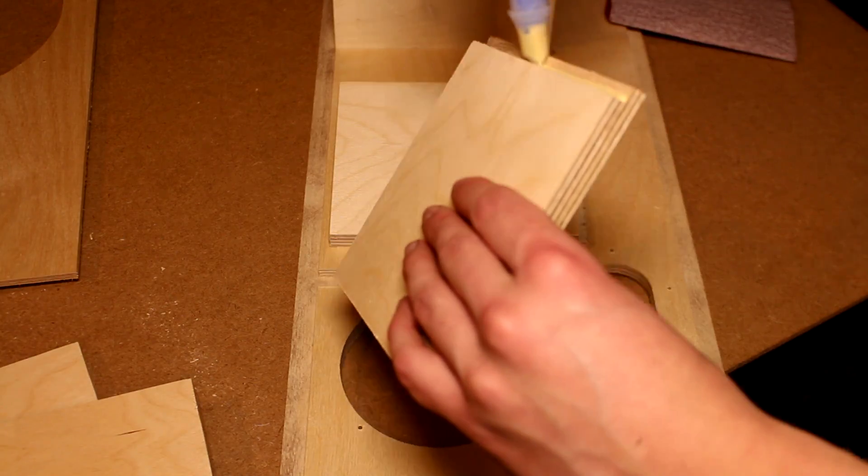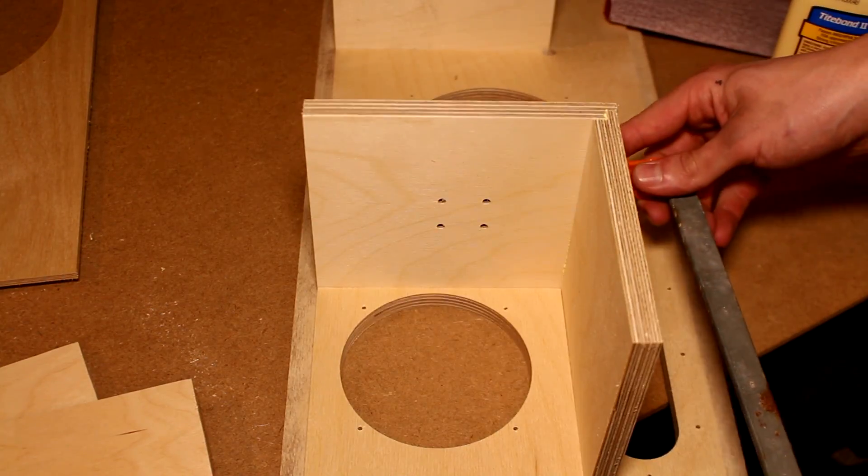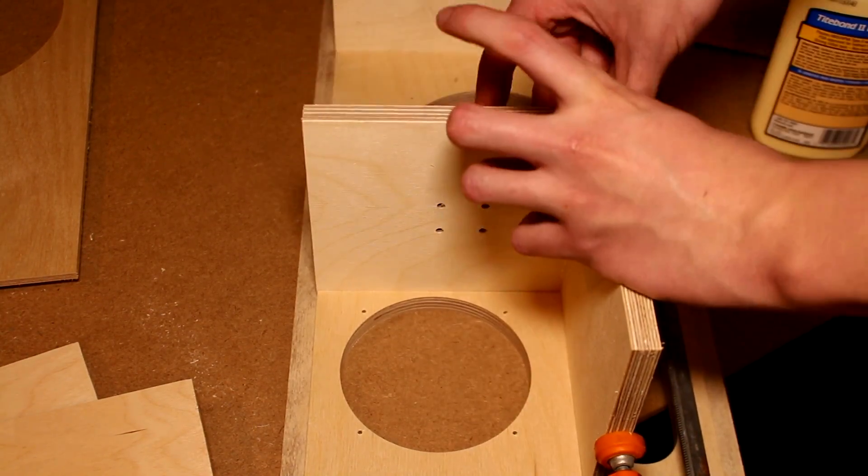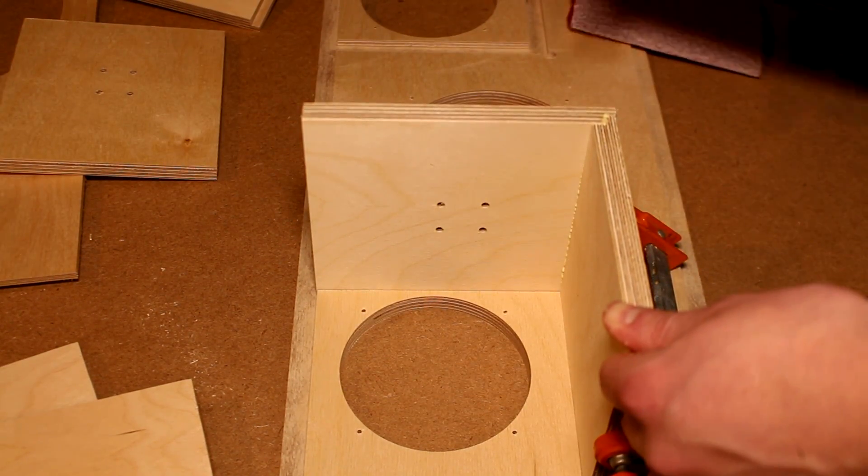For my cabinet, I both glued and nailed everything together. For the wood glue, I used Titebond II, and for the nails I used one-inch brad nails. You could probably also get away with using wood glue and clamps if you have enough, but since I didn't, I just nailed everything together.